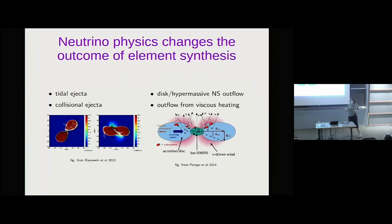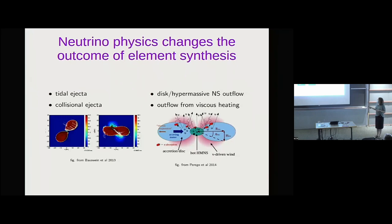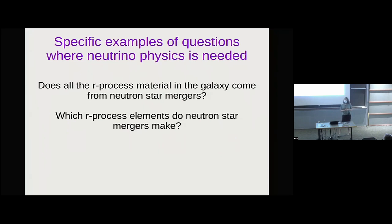There are four places within a neutron star merger, roughly categorized, where you could make elements. You have the two neutron stars spiraling in, and some material gets ejected off the side, and some from the contact interface — these are called collisional ejecta. After the remnant forms, you have material that leaves the sides of the accretion disk (viscous evaporation), and material that gets blown off in a neutrino-driven wind.